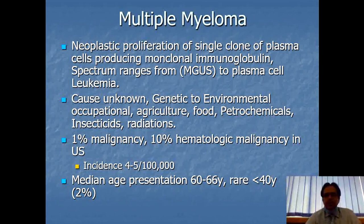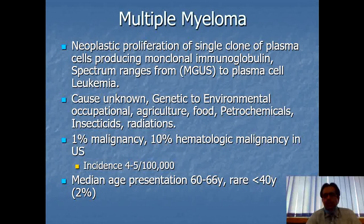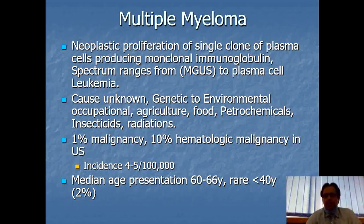Multiple myeloma is a neoplastic proliferation of a single clone of plasma cells which produce monoclonal immunoglobulins. The spectrum ranges from MGUS to plasma cell leukemia. MGUS stands for monoclonal gammopathy of unknown significance, and both MGUS and plasma cell leukemia fall in the differential diagnosis of multiple myeloma.